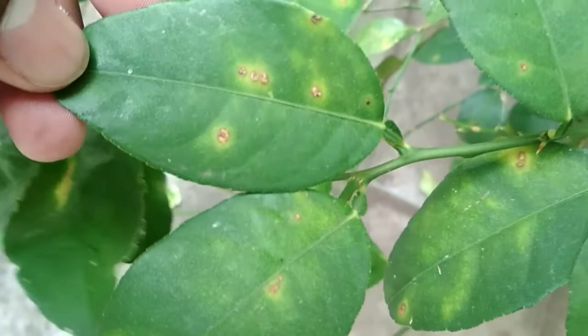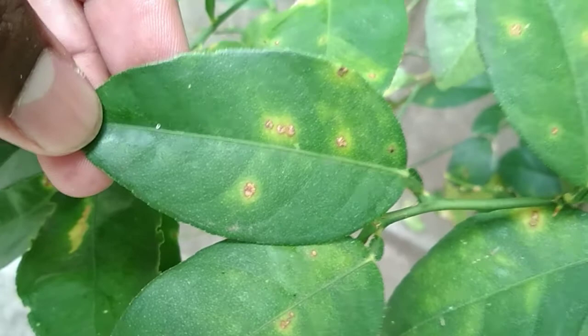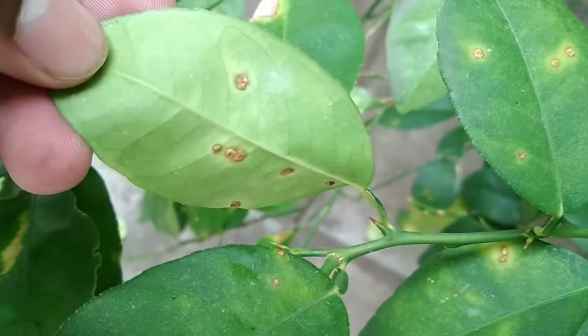Citrus canker will produce brown color raised lesions on both surfaces of the leaves. It will also produce a yellow halo around the lesions. The yellow halo is the typical symptom of a bacterial disease.